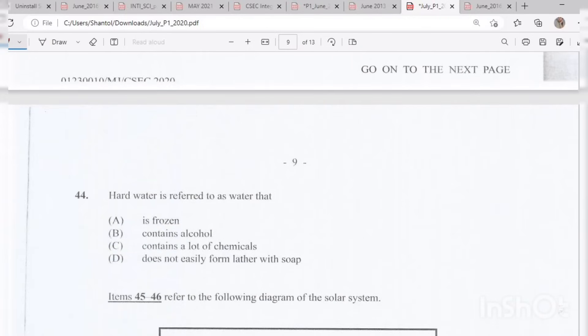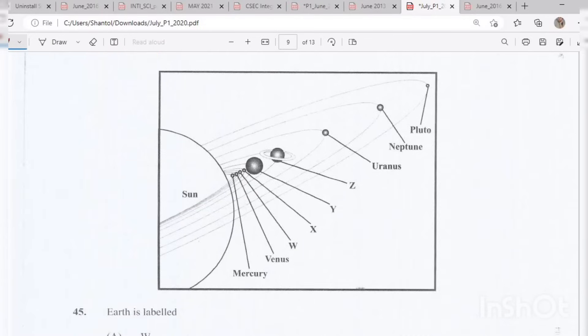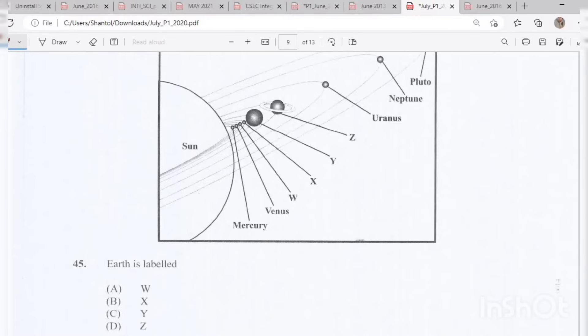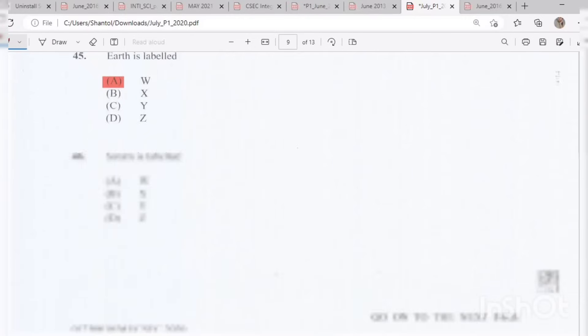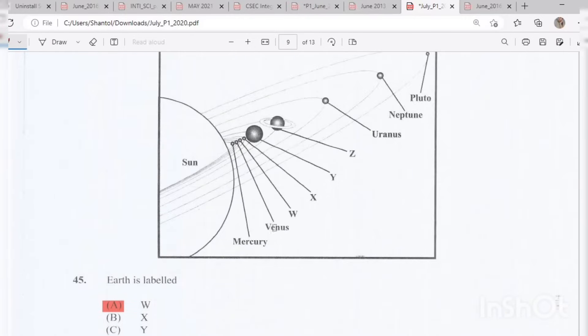Question 44: Hard water is referred to as water that D does not easily form lather with soap. Question 45 refers to the following diagram of the solar system. Earth is labeled, if you look at it, you have the Sun, then Mercury, Venus, Earth would come at W. So if you said W, you are correct. Question 46: Saturn is labeled. So Mercury, Venus, Earth, Mars, Jupiter, Saturn. So Saturn would be Z.